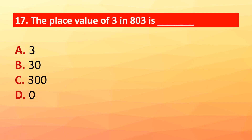Question 17: The place value of 3 in 803 is dash. The correct answer is option A: 3.